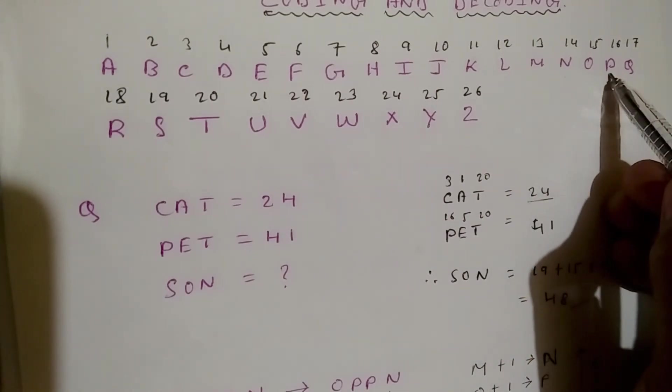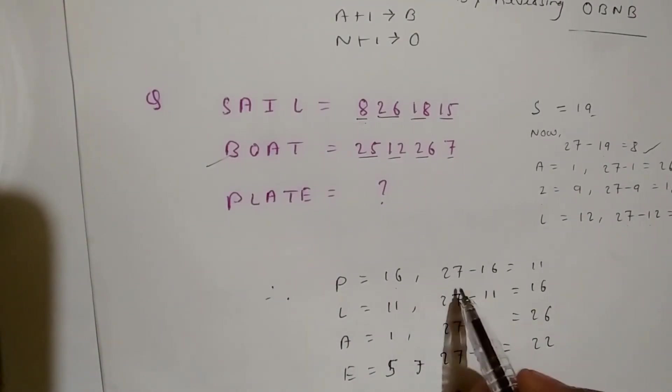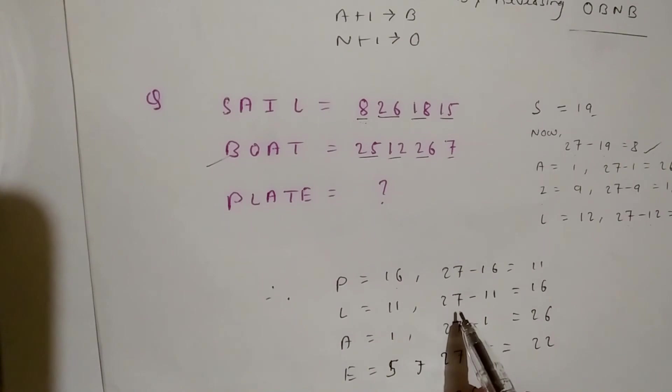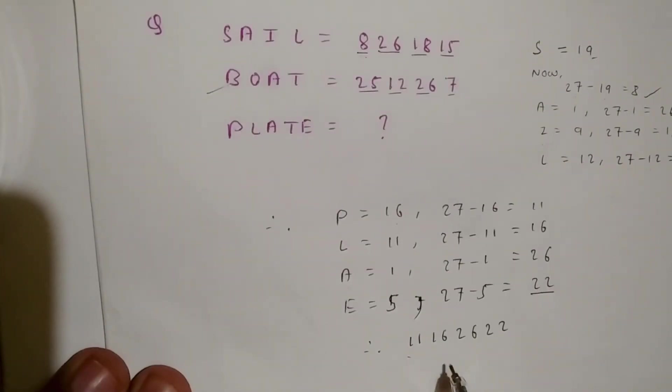Then P equals 16. 27 minus 16 equals 11. L equals 12. 27 minus 12 equals 15. Wait, that should be 16. A equals 1. 27 minus 1 equals 26. T equals 20. 27 minus 20 equals 7. E equals 5. 27 minus 5 equals 22. So we get our answer: 11, 16, 26, 7, 22. Okay friends.